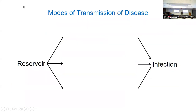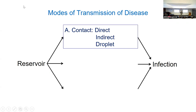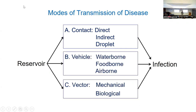Let's talk about transmission of disease. You have the reservoir where the organism lives, and then there are several ways it can get from the reservoir to a human. There are three categories: contact, vehicle, and vector. We're going to break each of these down step by step.